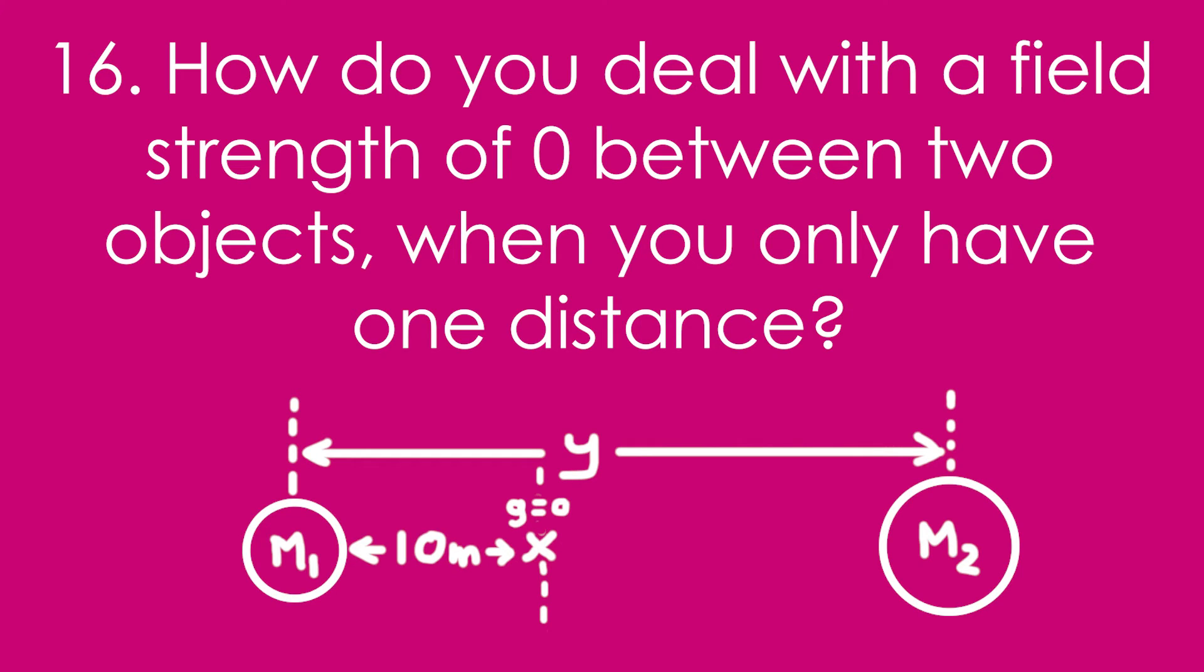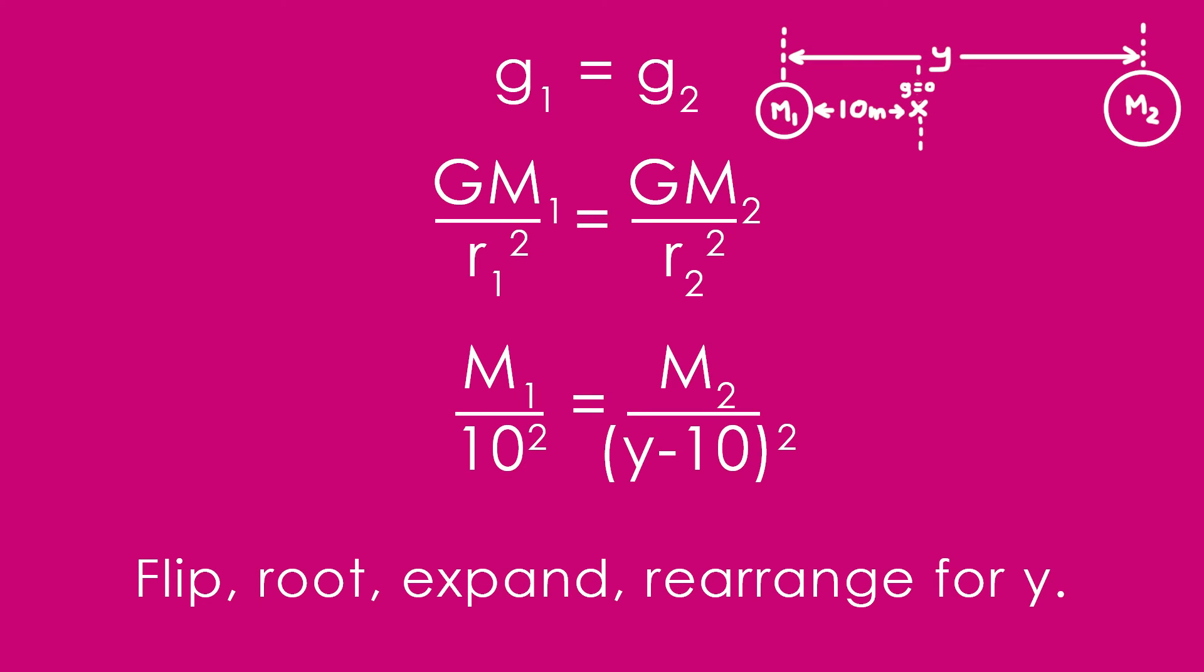Sixteen, fairly tricky. How do you deal with a field strength of zero between two objects when you only have one distance? How are you going to represent this in an equation? Okay, so if there's no resultant field strength, then that means that the individual field strengths are equal and opposite at that point. So we can see Gm over r squared for one planet equals Gm over r squared for the other. Cancelling out the G's, we just say that m1 over 10 squared is equal to m2 over y minus 10 all squared. What you want to do is flip the whole equation on its head, square root everything, then we expand and then rearrange for y.